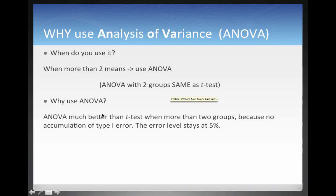Why should you use ANOVA? There are two reasons. The first one is that it's much faster than doing individual t-tests. Imagine if you have three groups — A, B, C — you could do a t-test to compare A with B, a t-test to compare A with C, and a t-test to compare B with C. With ANOVA, you could just do one test and right away it would tell you whether there is a difference between any of these groups or not.